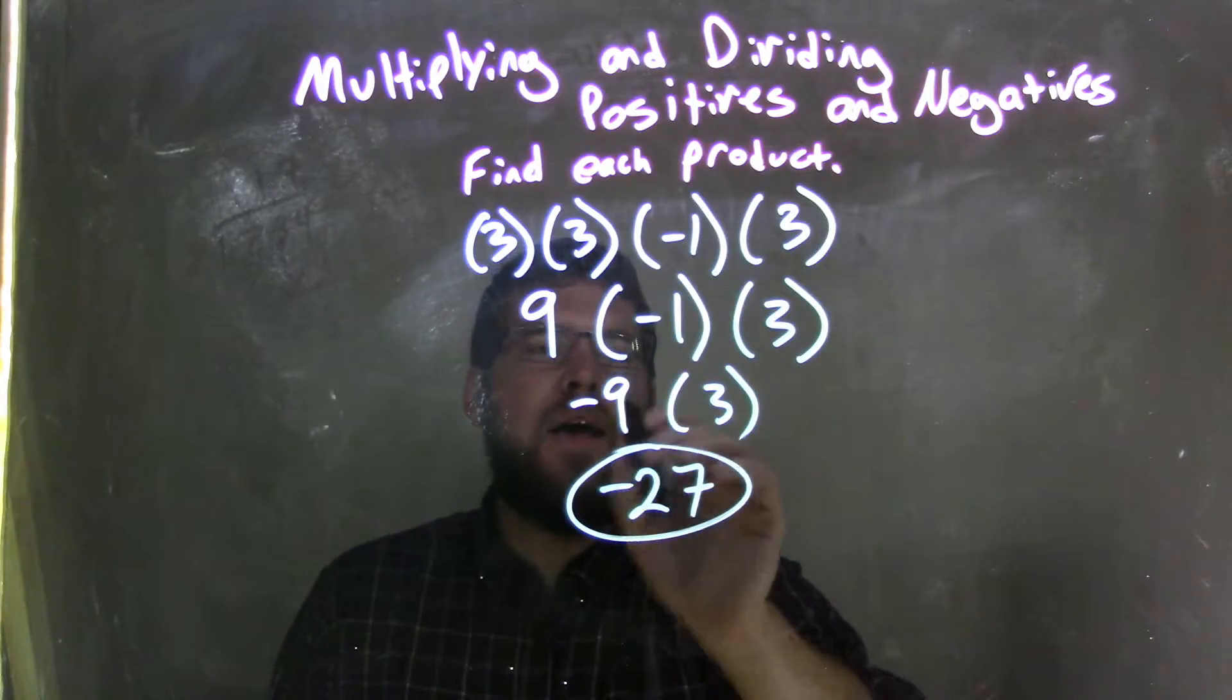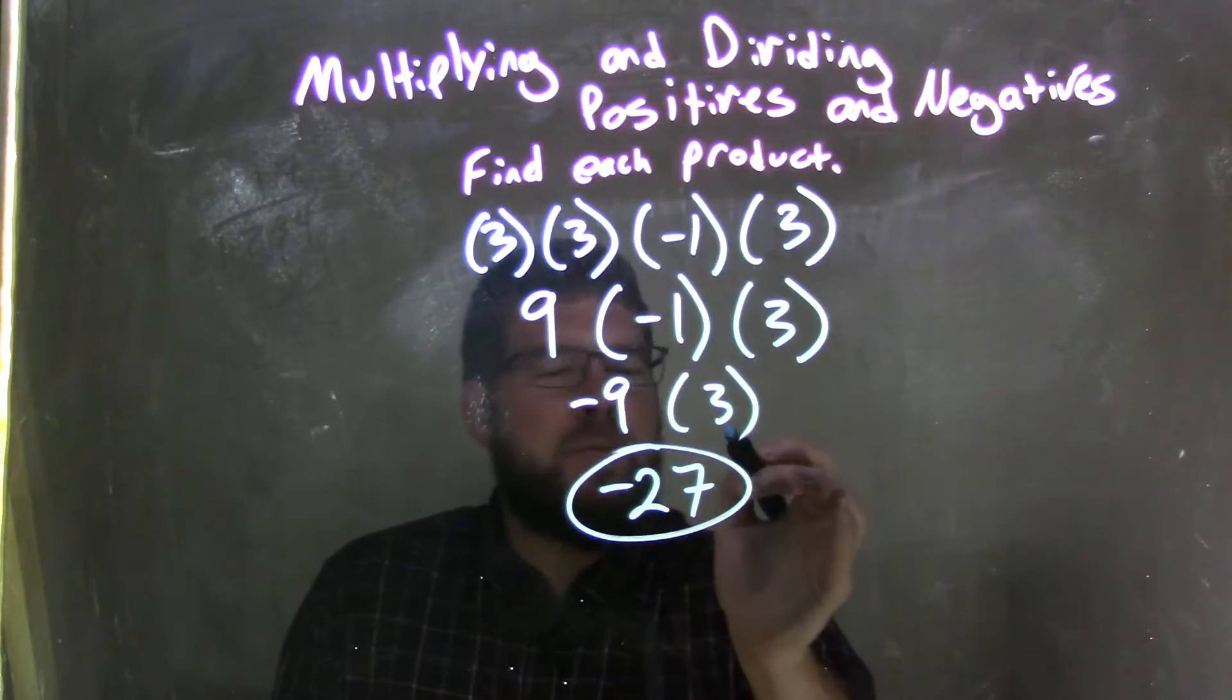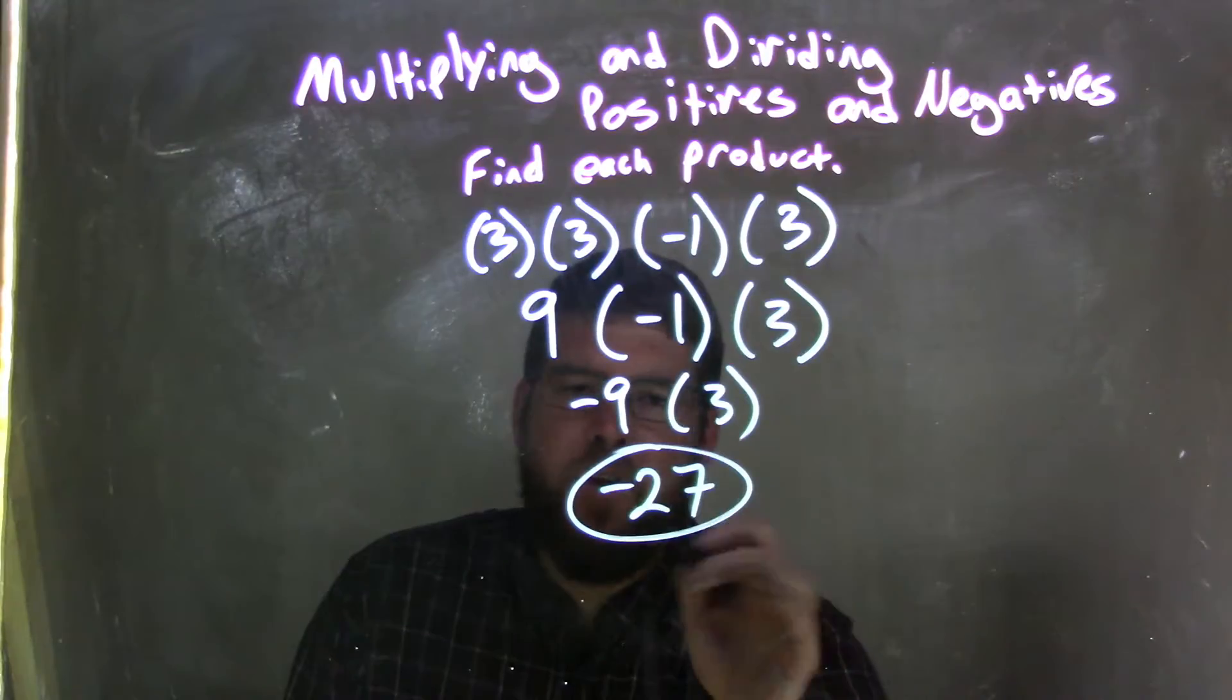And we brought down this 3. So now we have negative 9 times a positive 3. Negative 9 times a positive 3 is negative 27, which in this case is our final answer.